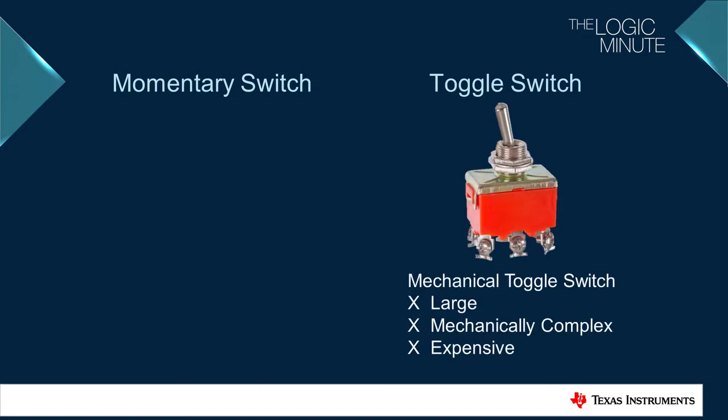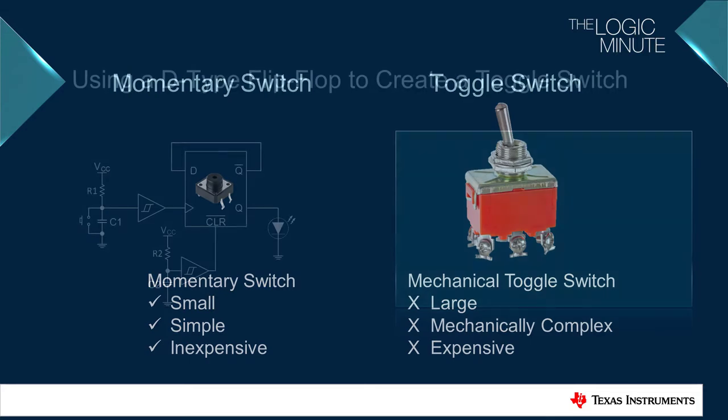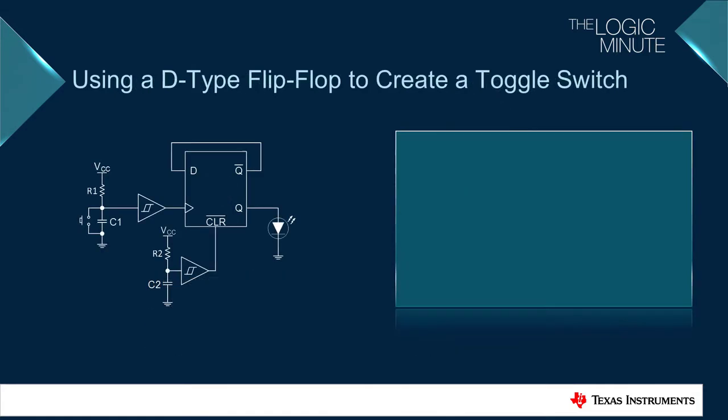Mechanical toggle switches are typically large, mechanically complex, and relatively expensive. It is desirable to use a momentary switch instead because they are small, low cost, and mechanically simple. However, some logic must be added to produce the toggle function.